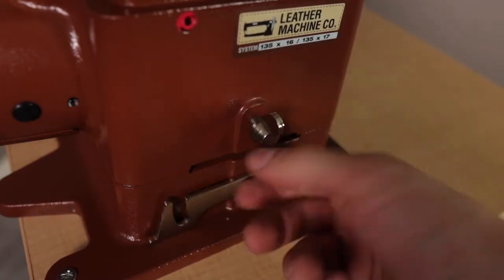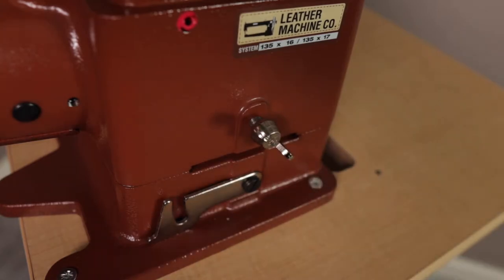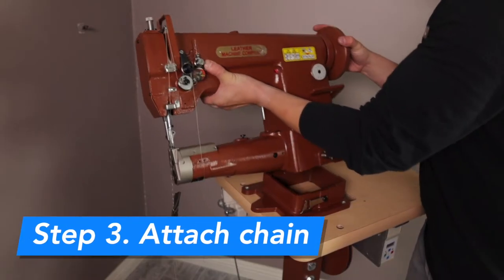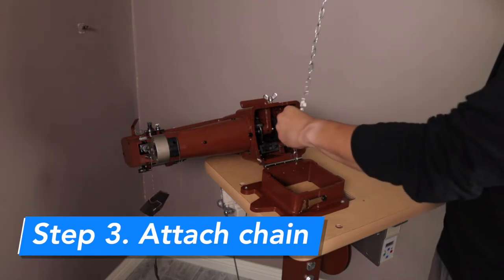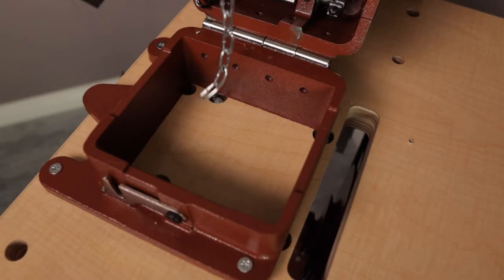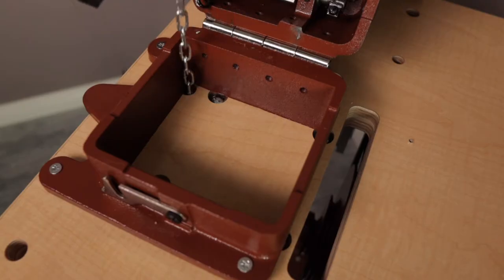After securing the machine to the table, loosen the front latch and gently lower the machine head for access to the lower half. Lower the chain in the corner hole and attach the end of the chain to the machine's S-hook.